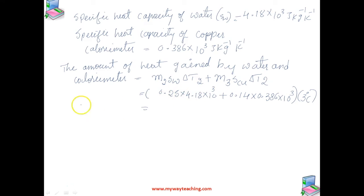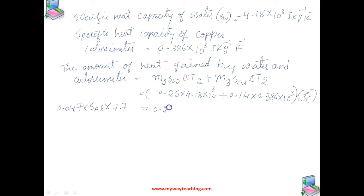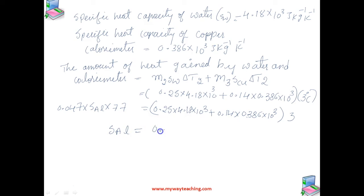The value obtained will be equal to the heat lost by the aluminum sphere. That is: 0.047 × S_al × 77 = (0.25 × 4.18 × 10³ + 0.14 × 0.386 × 10³) × 3 degree Celsius. Solving this, we get the specific heat capacity of aluminum as 0.911 kilojoule per kg per Kelvin.